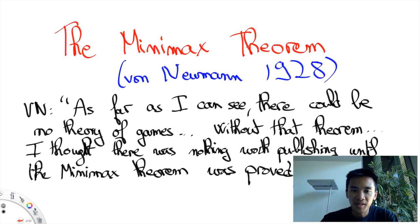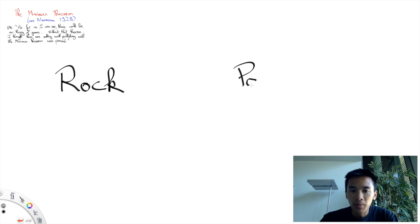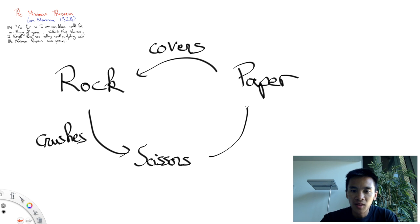The reason for that is quite simple. If you consider a game like Rock Paper Scissors, where paper covers rock, rock crushes scissors and scissors cut paper, there is no winning strategy. Whatever choice you make, your opponent has a way to beat you.